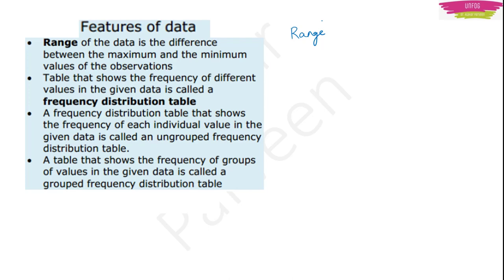Some values will be given — some numbers may be given — and you call them as observations. In those observations, there will be some value which will be biggest and some value which will be smallest. If you subtract the maximum value minus the minimum value, then the value you get is known as the range of the data. Whatever your question is, based on that question you will know what is the range.